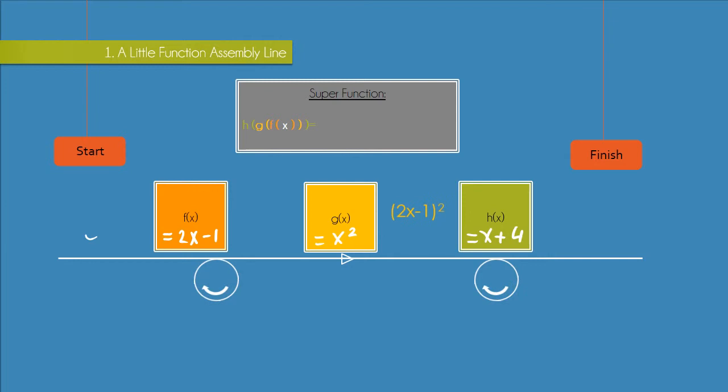Then we send that to g of x where it gets squared. So we just have 2x minus 1 squared. That gets sent to h of x where 4 gets added to it. So we just have 2x minus 1 squared plus 4.